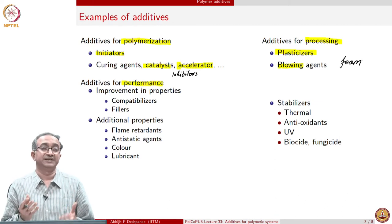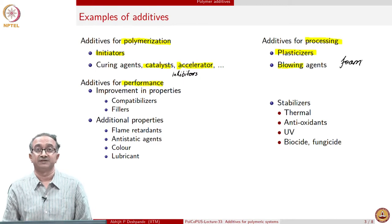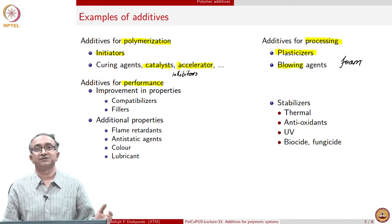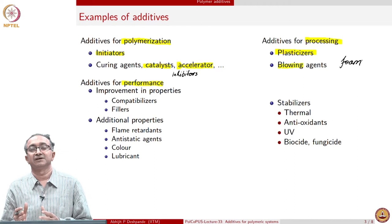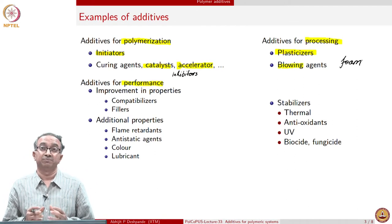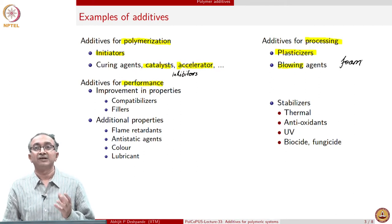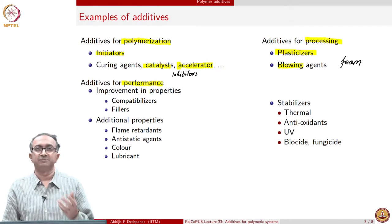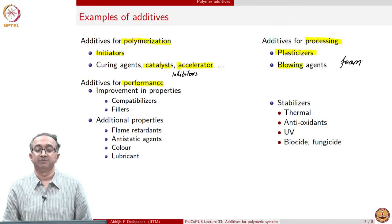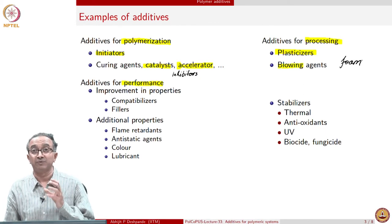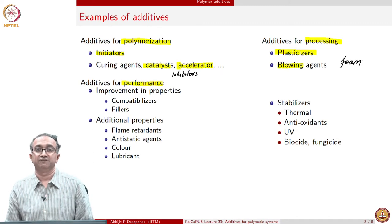We see foam products all around us — not just styrofoam, but in mattresses, insulation, or false roofing in residences. Many important electronic and electrical components also contain foam materials — polyurethane or other materials used as electrical or thermal insulators. Therefore, foaming and blowing agents are an important class of additives.